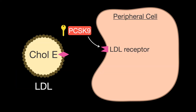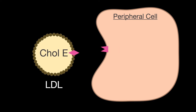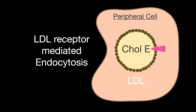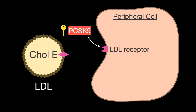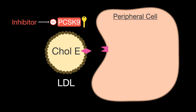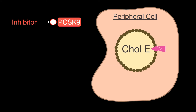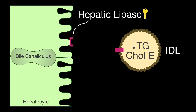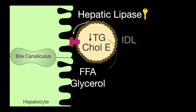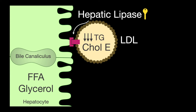PCSK9 is an enzyme that degrades the LDL receptor. The LDL receptor mediates LDL endocytosis into peripheral cells. If PCSK9 is present, serum LDL concentrations will increase. Consequently, if the enzyme is inhibited, there will be an increase in LDL receptor recycling, and thus serum LDL will decrease.